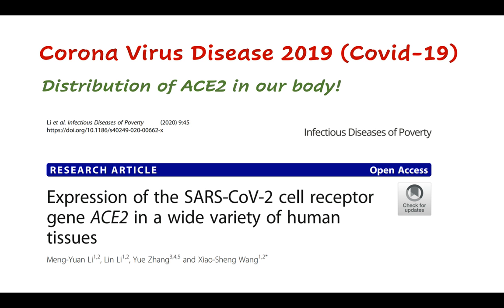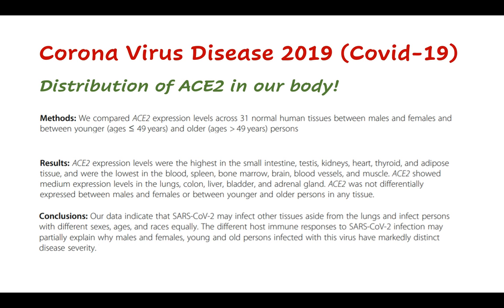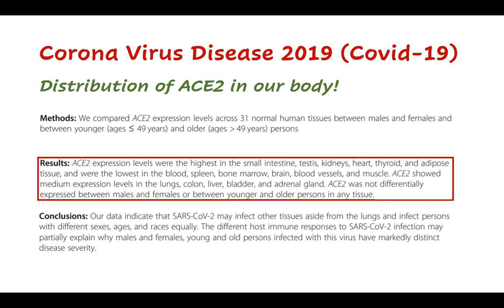Because ACE2 is the functional receptor for the COVID-19 virus, it is important to know the distribution of ACE2 in our body to identify which cells are potential candidates for infection. In a recently published study, the expression of ACE2 in different human tissues was examined. ACE2 expression levels were highest in the small intestine, testes, kidneys, heart, thyroid, and adipose tissue, and were lowest in the blood, spleen, bone marrow, brain, blood vessels, and muscles. ACE2 showed medium expression levels in the lungs, colon, liver, bladder, and adrenal gland.